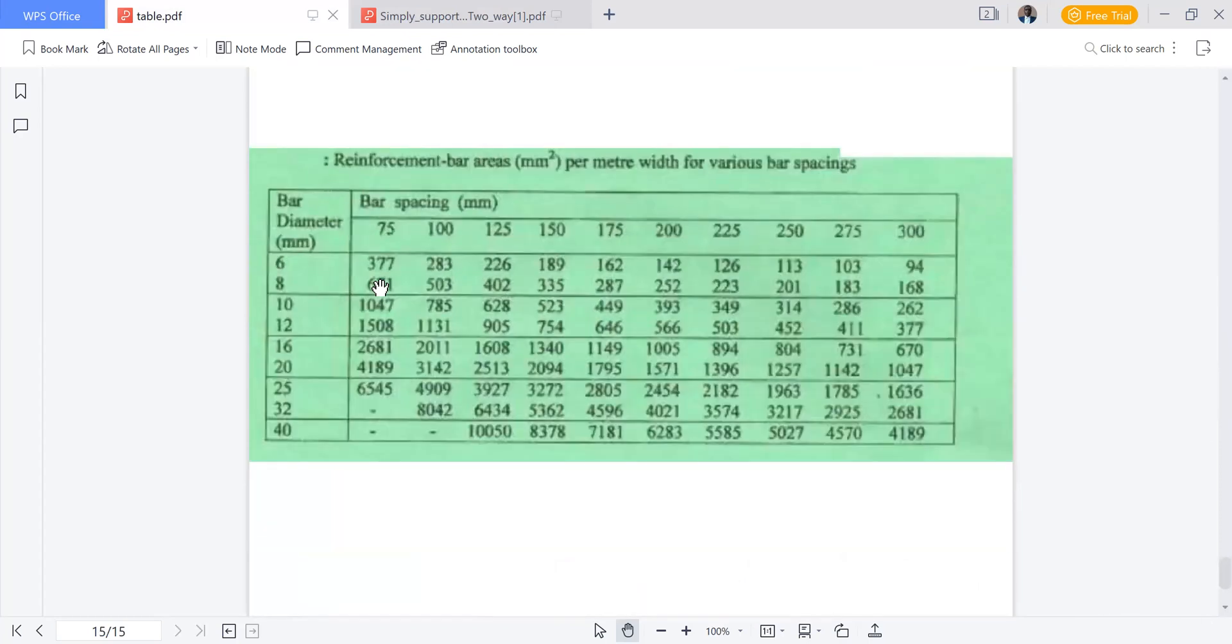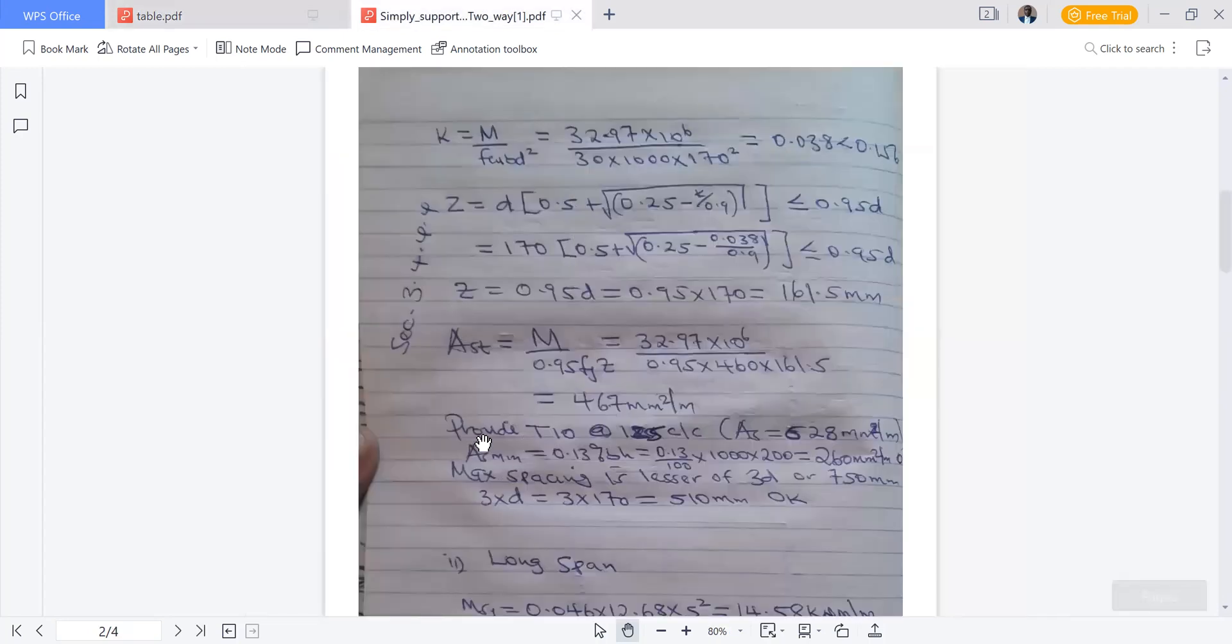This is the table. We are using bar diameter of 10. From 525, 628, up to 1047, all of them will satisfy the area and spacing requirement. Because 523 is closer to the required area, the section might fail in deflection criteria, so I will choose 10 bar diameter at spacing of 125 millimeter, giving me an area of 628 millimeter square per meter. Provide T10 at 125 center to center, area 628 mm² per meter.